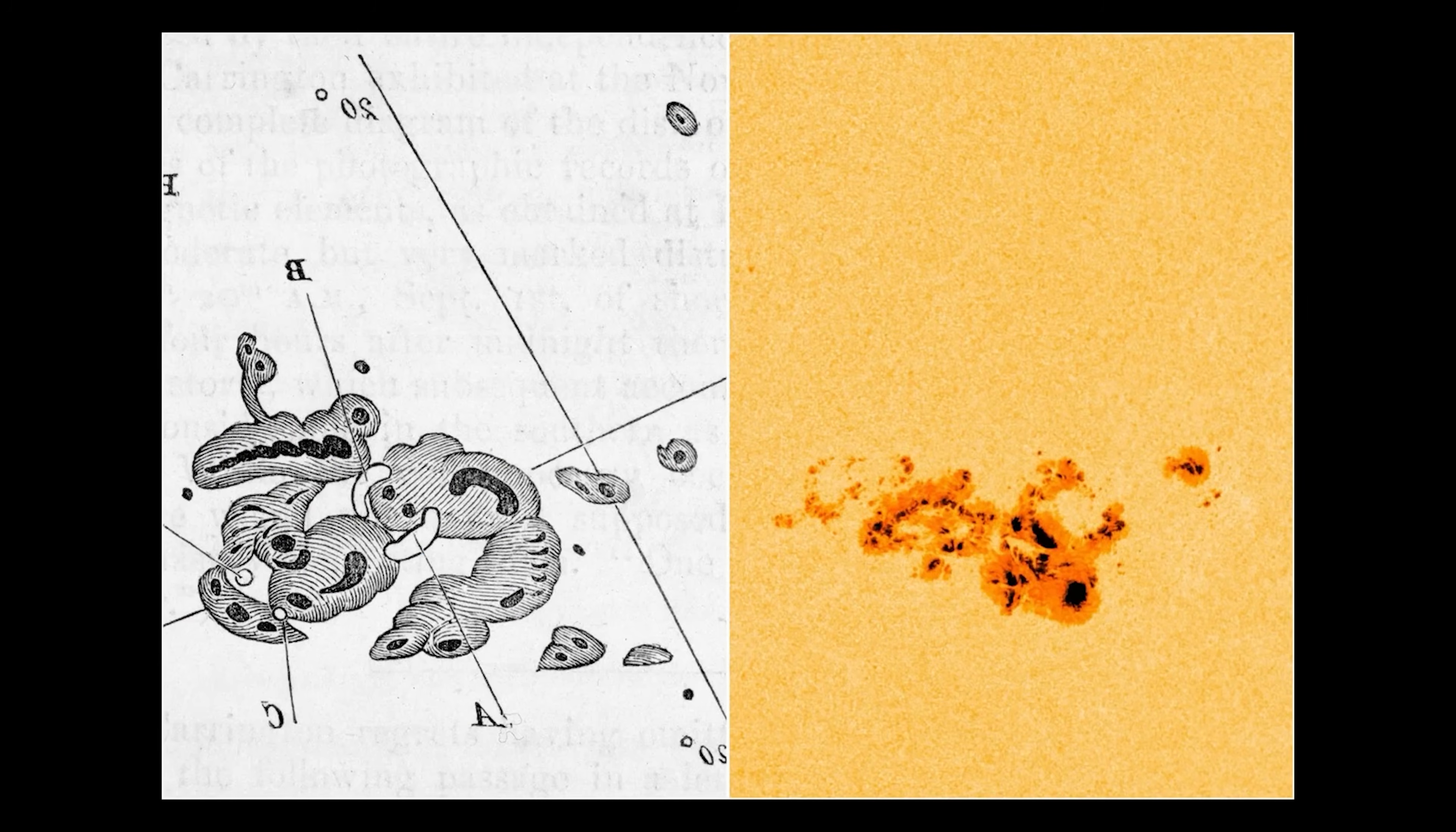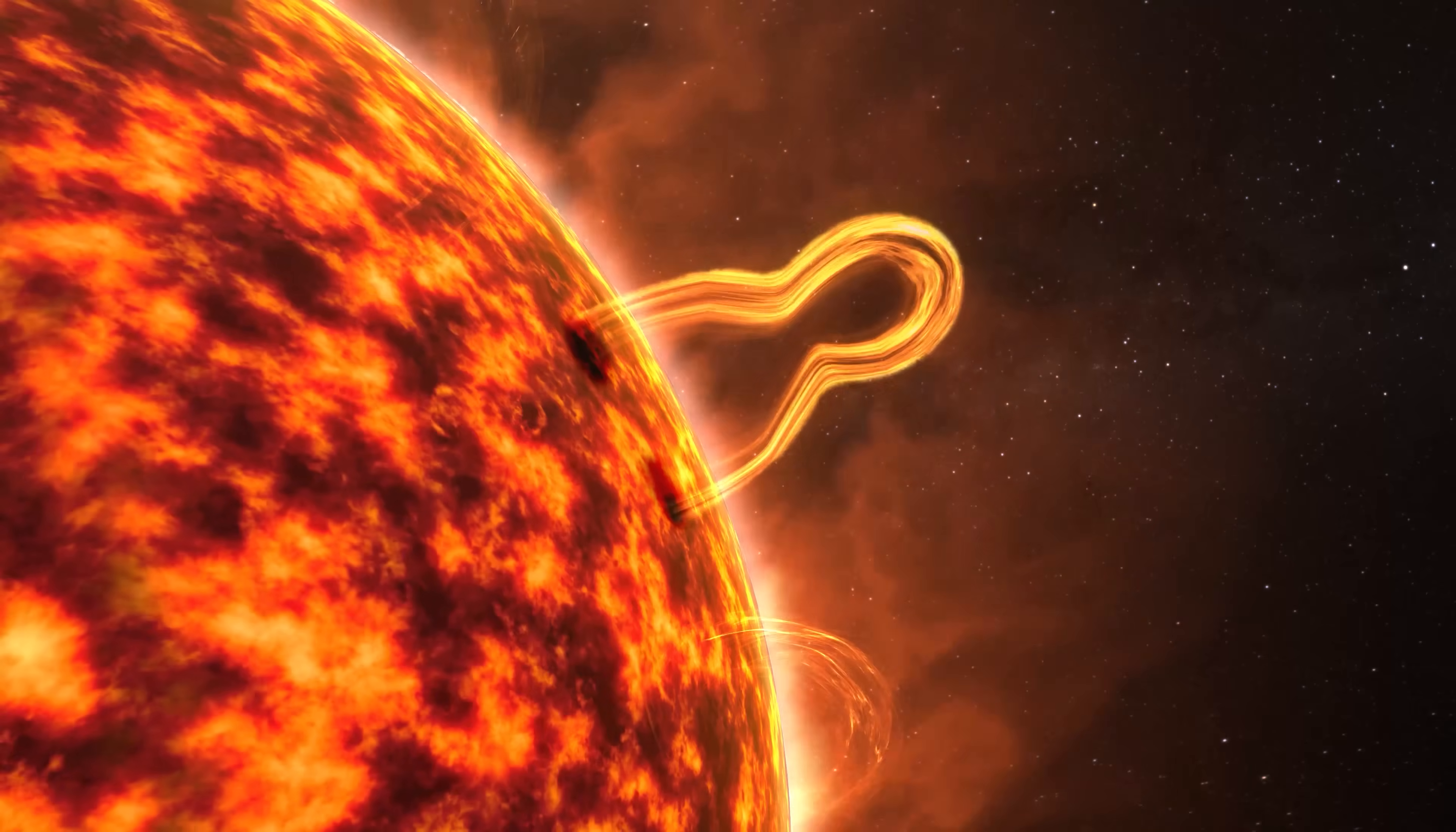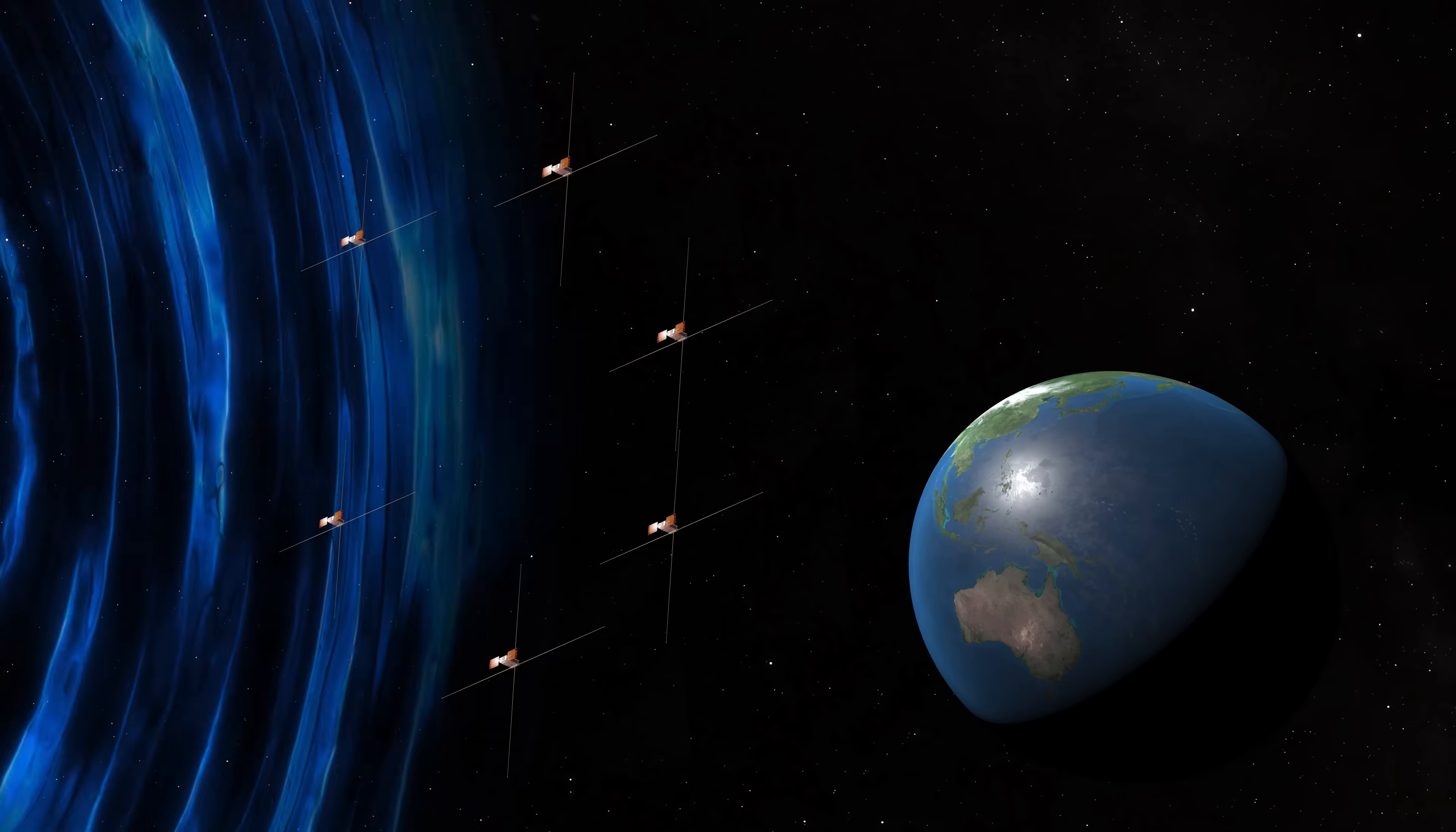While he was sketching these sunspots, he was blinded by a sudden flash of light. A dazzling white light erupting from a small region of the Sun and lasting for five minutes. They were unaware of it at the time, but this flare was a massive CME that was headed straight towards the Earth. And nearly 18 hours later, it unleashed its force on our planet.